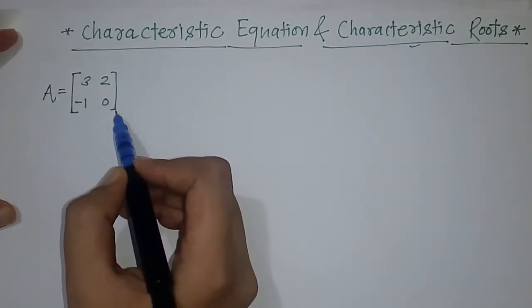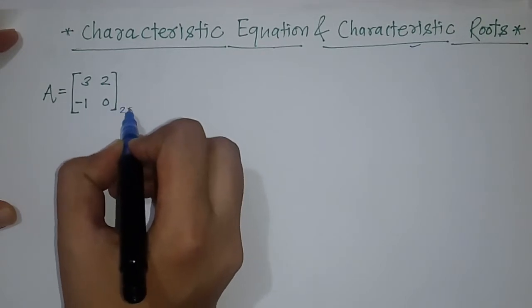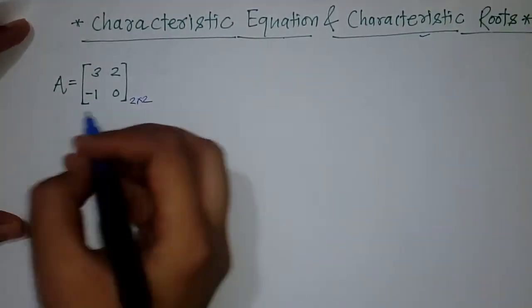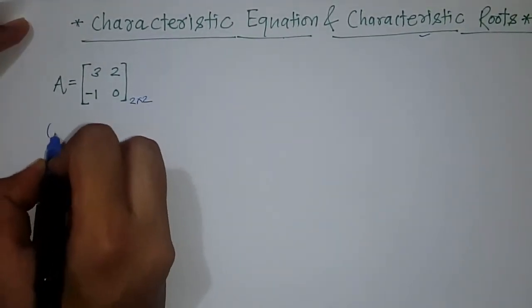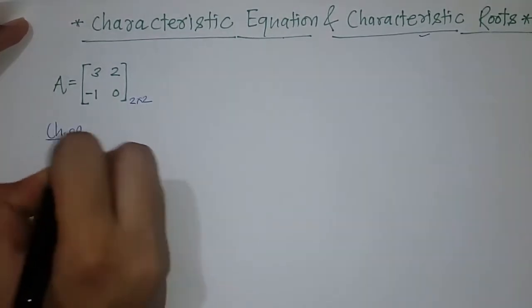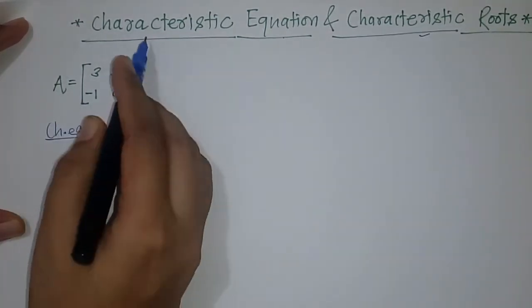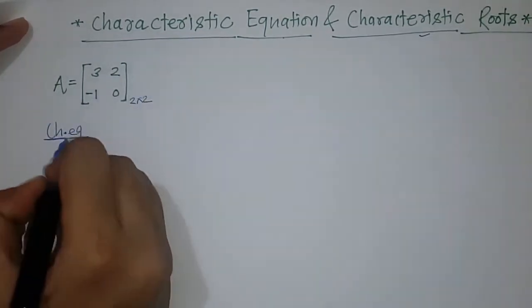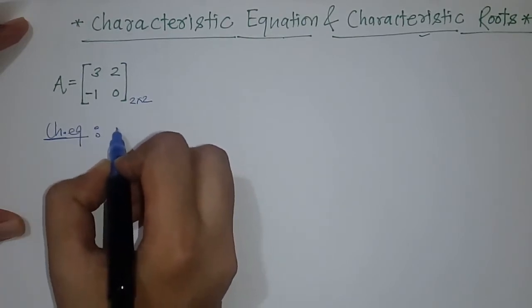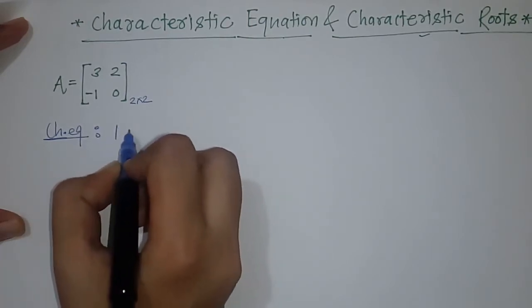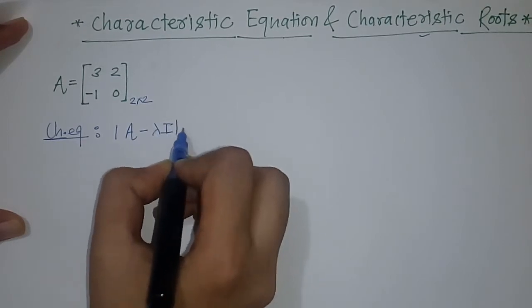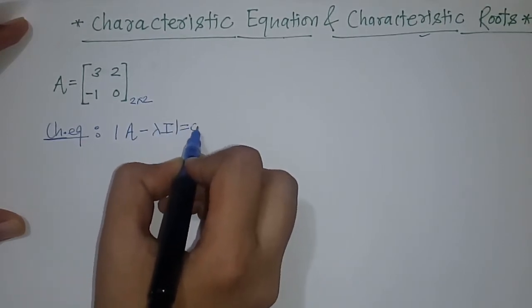Here we have taken matrix A of order 2 by 2. Its characteristic equation is given by the determinant of A minus lambda I equals to 0.